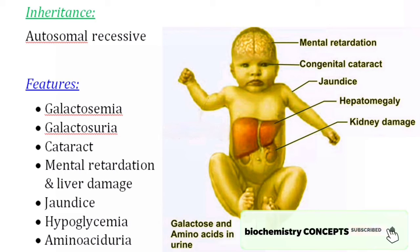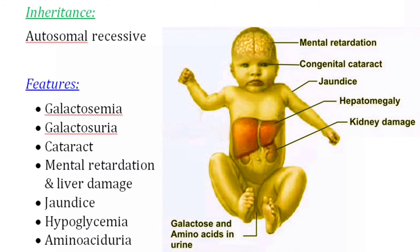Mental retardation and liver damage are due to accumulation of galactose and galactose-1-phosphate in the cerebral cortex and liver. Jaundice occurs because bilirubin uptake and bilirubin conjugation are reduced when the liver is damaged, so unconjugated bilirubin levels are increased in the blood, which leads to jaundice.